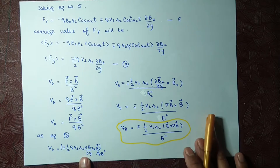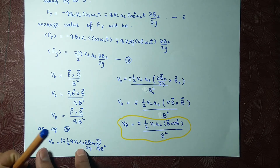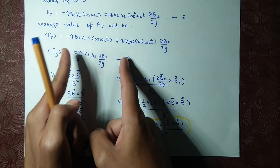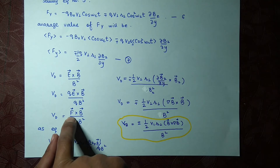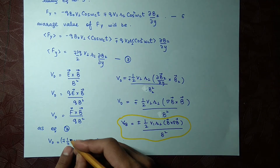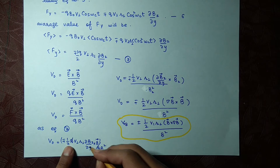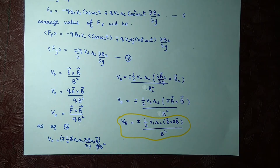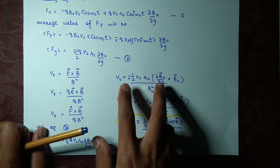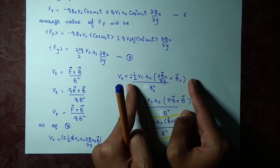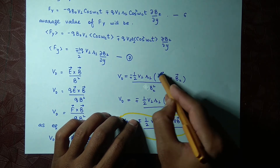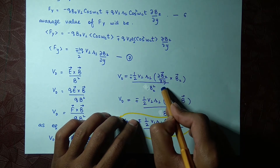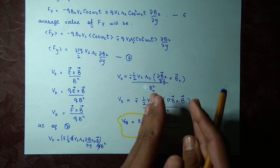Putting this value of F into the drift velocity formula gives a new expression. We then cancel out q — this q cancels with that q — so after canceling, the resulting expression simplifies. You can see that this involves a gradient, as I explained in the previous lecture.